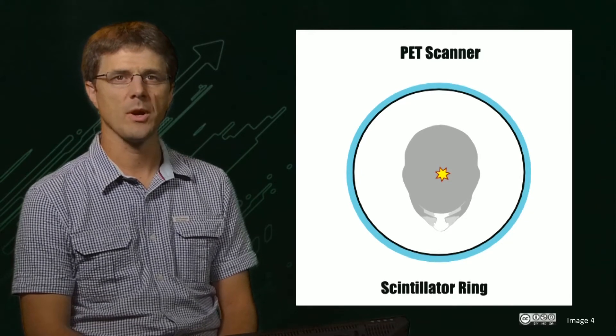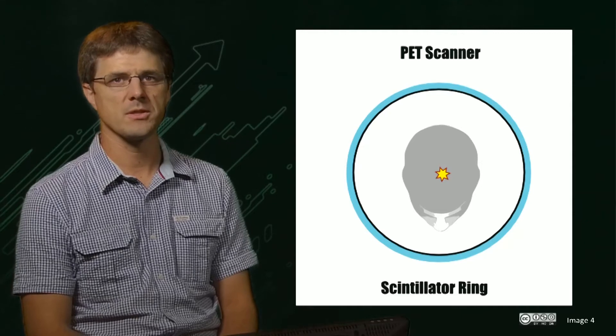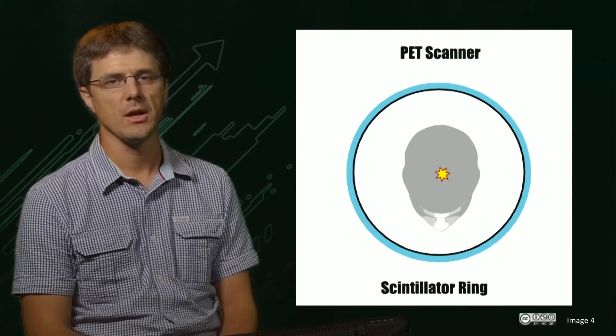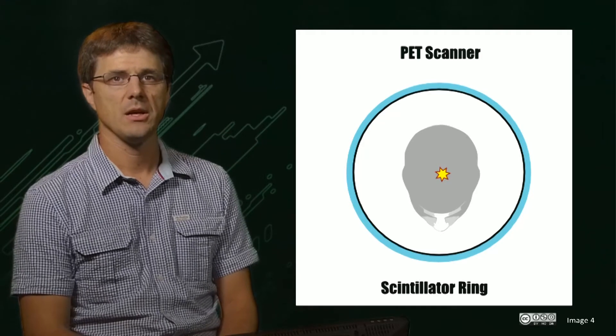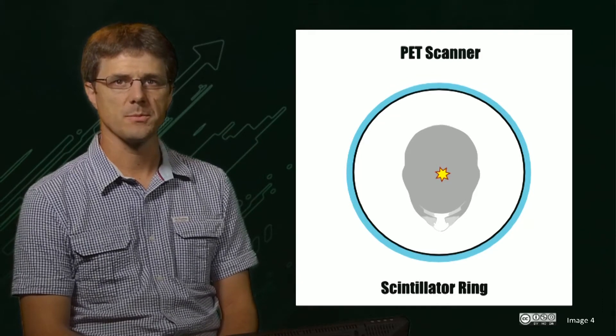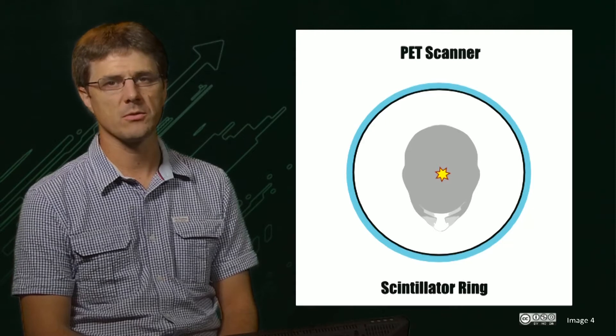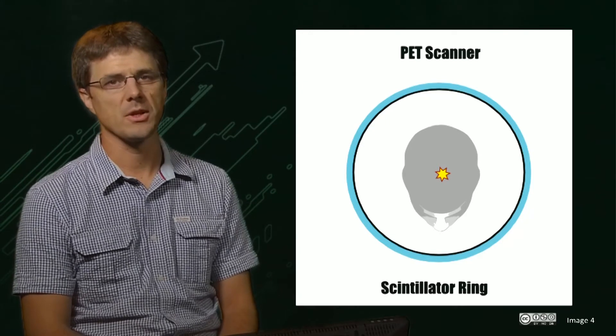In PET imaging, a radiotracer is then injected and once this binds with the target tissue, a collision event occurs, represented here as a star. This results in two positrons being emitted in exactly opposite directions to each other, at the speed of light.